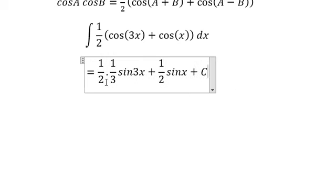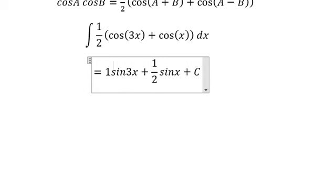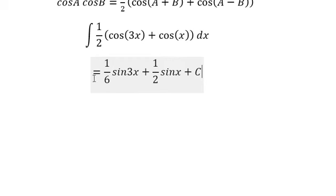1 over 2 multiply with 1 over 3, so you get 1 over 6. And this is the final result. That's the end, thank you for watching.